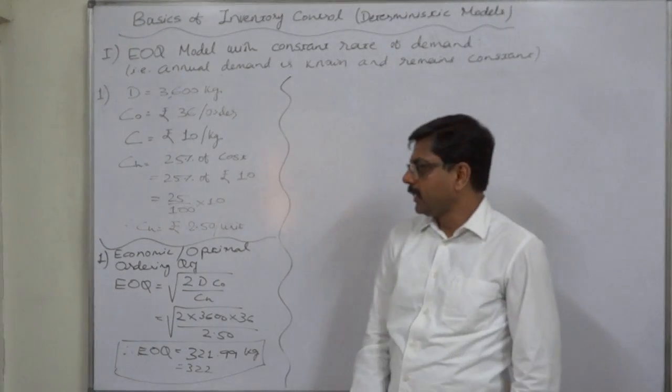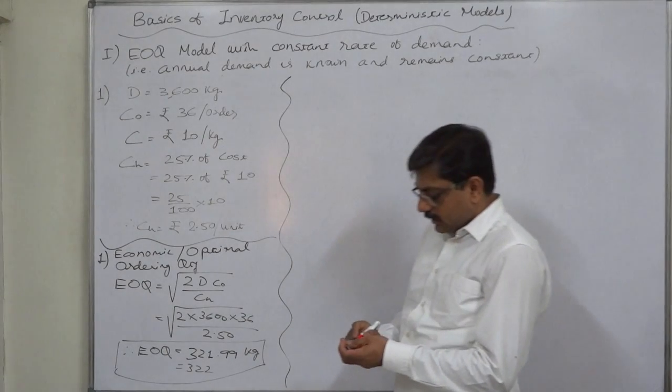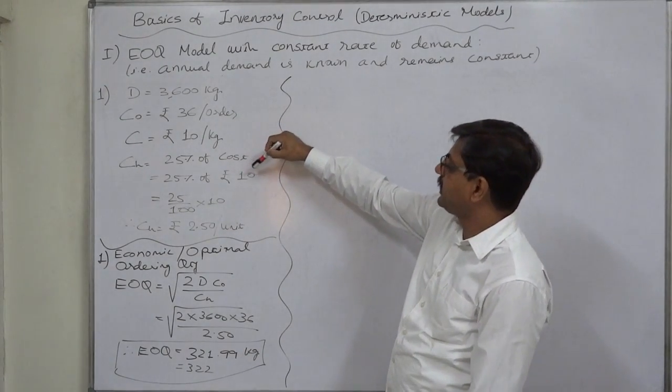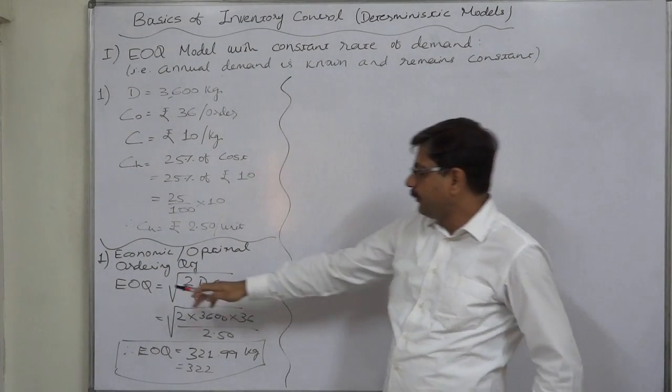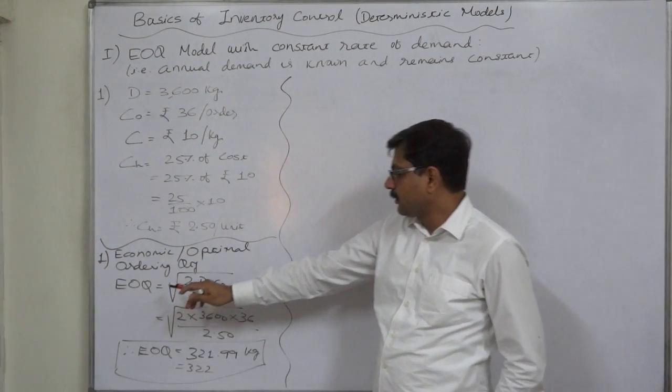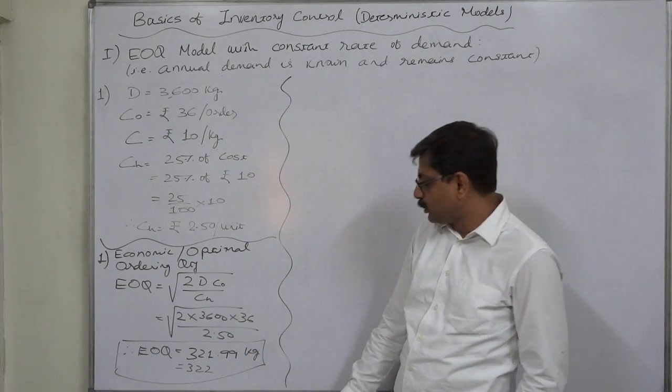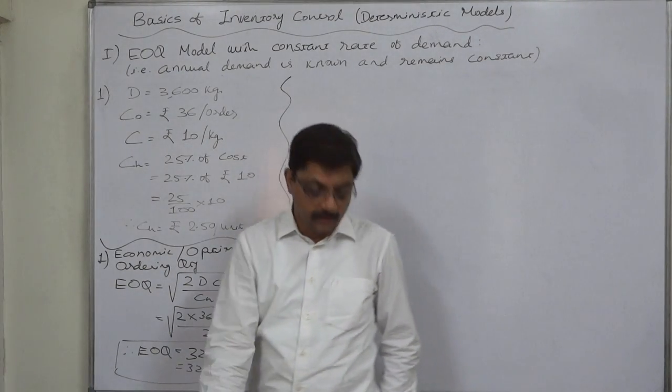This is economic order quantity. That means, to have the lowest possible ordering quantity and carrying cost, the company should make order of approximately 322 kg every time.